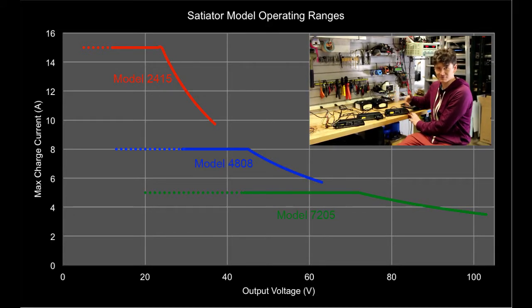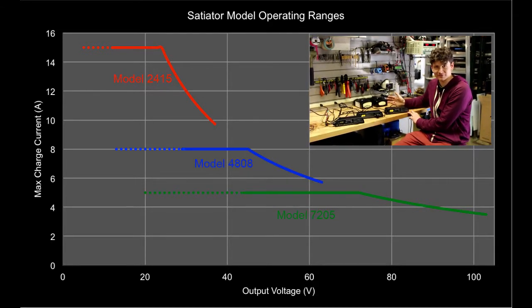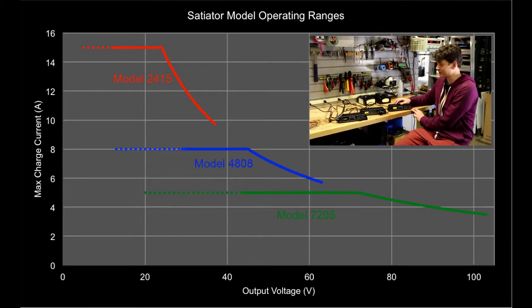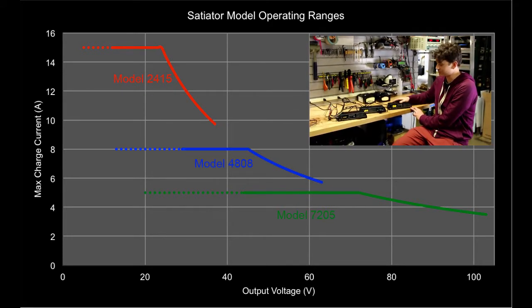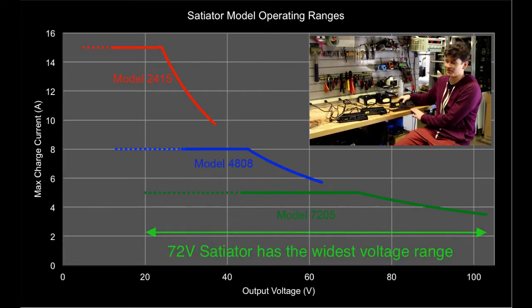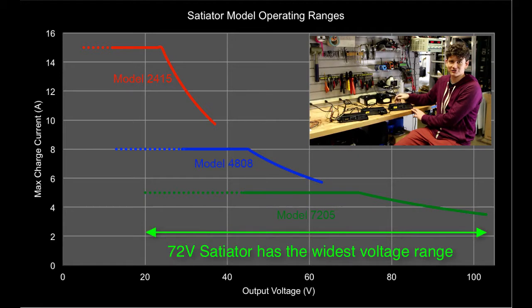So if you're somebody who has a range of battery packs, a whole bunch of different electric vehicle projects, some 36 volts, some 72 volts, some 48, who knows what the future has in store, this 72 volt model would have the widest applicability for you if you don't mind it not charging quite as fast.